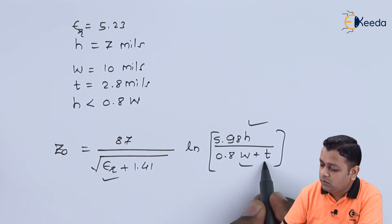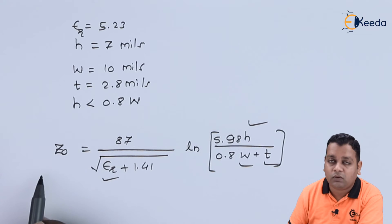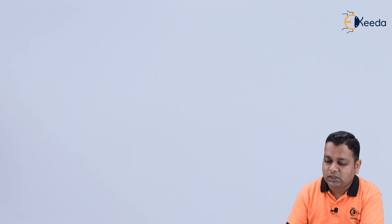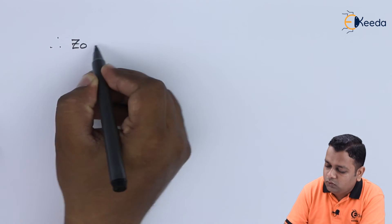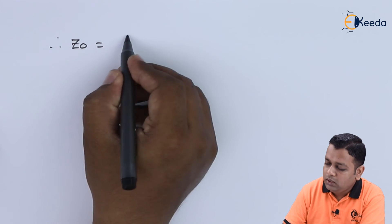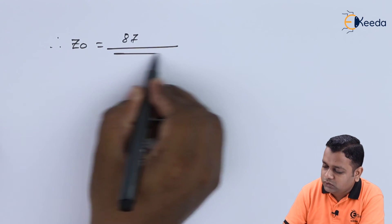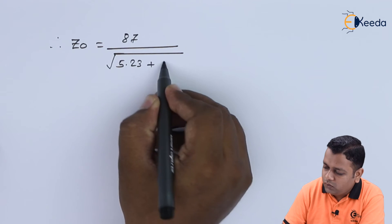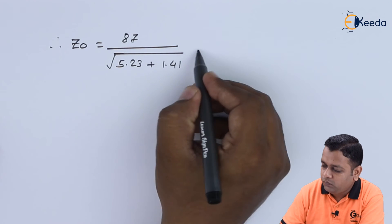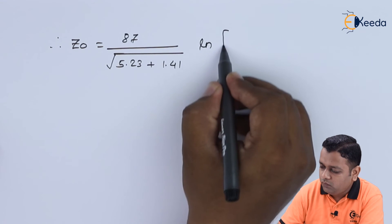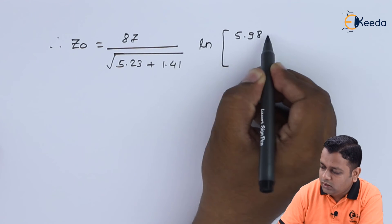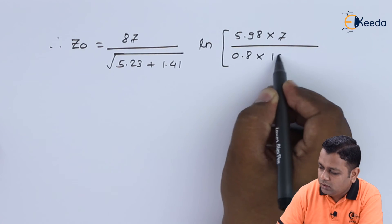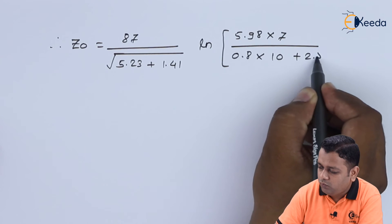Substituting all values, we get: Z0 = 87 / sqrt(5.23 + 1.41) × ln(5.98 × 7 / (0.8 × 10 + 2.8)).